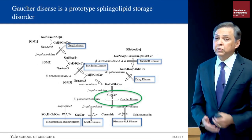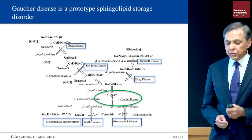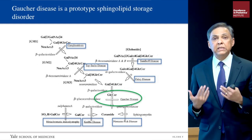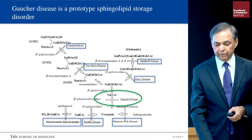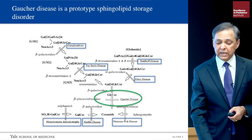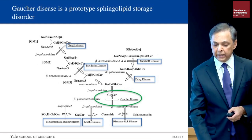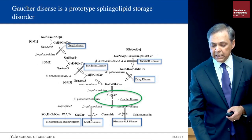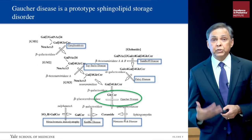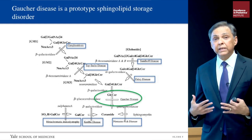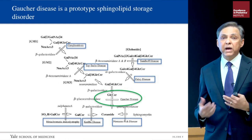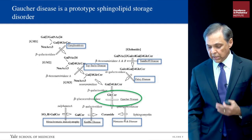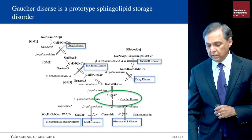Gaucher disease is what we call a sphingolipidosis. There are sequential catabolic steps in the degradation of complex glycosphingolipids as cells turn over in the mononuclear phagocyte system. Sequential lysosomal hydrolysis occurs until you reach the simplest glycosphingolipid, glucosylceramide. In Gaucher disease, the enzyme degrading glucosylceramide is defective. Gaucher disease is connected to the same pathway where defects in Tay-Sachs disease, Fabry disease, and Niemann-Pick disease occur.